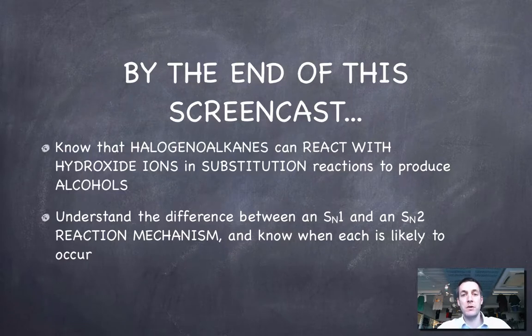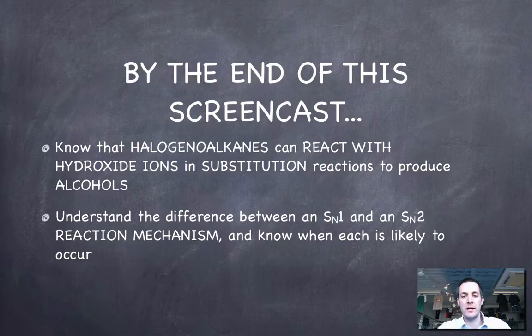So in this film, by the end of it you'll know what we make when a halogeanoalkane reacts with hydroxide ions, and you'll know that's called a nucleophilic substitution reaction and that will produce alcohols. And you'll understand the difference between two different types of mechanism called SN1 and SN2.